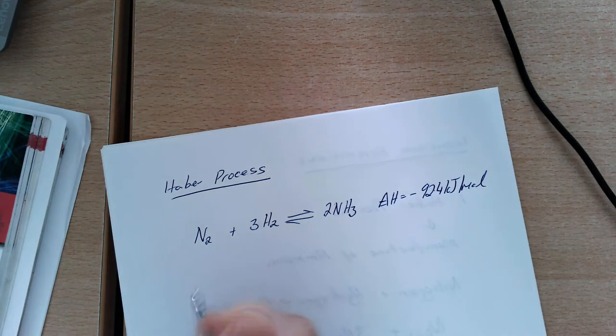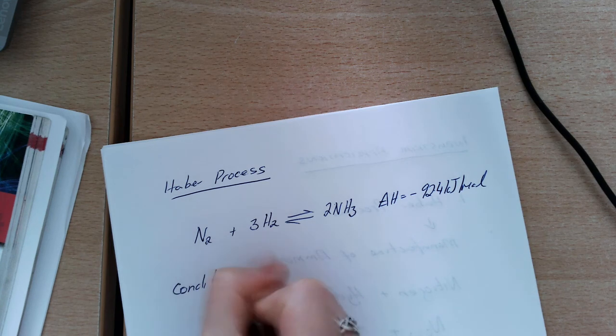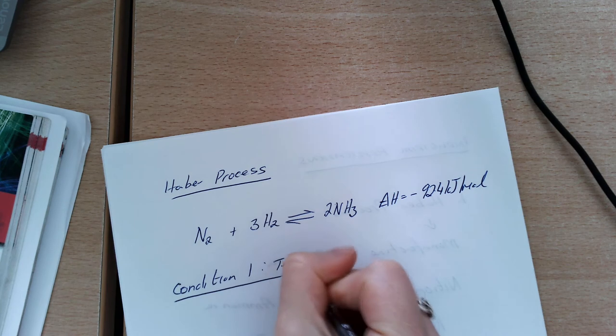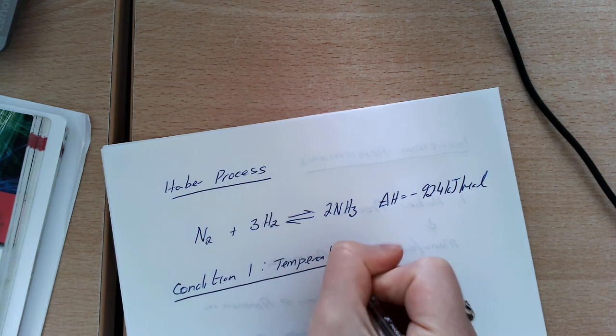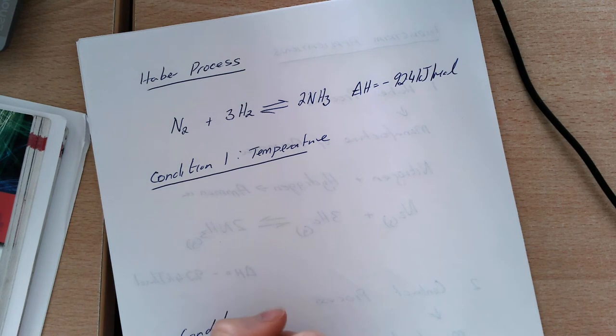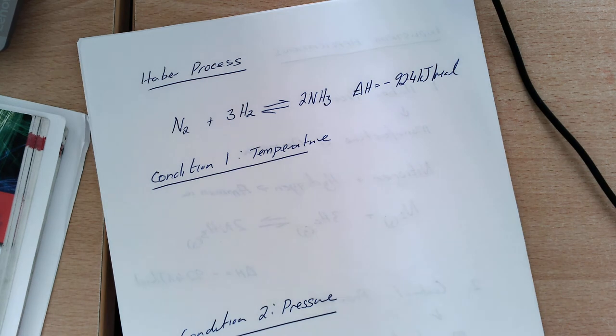The first thing we're going to look at is condition one. Primarily here we're concerned with temperature and pressure. We're going to look at two things: condition one, which is temperature, and condition two, which is pressure.